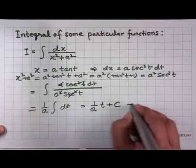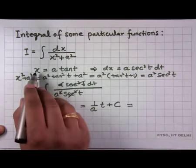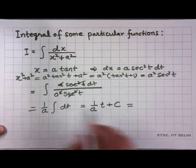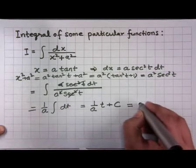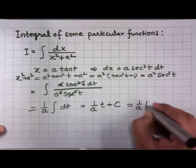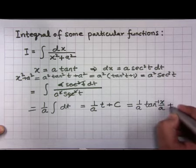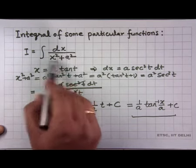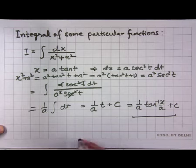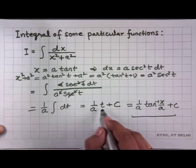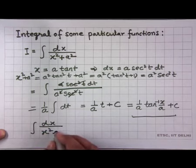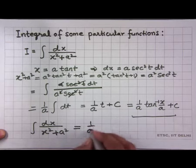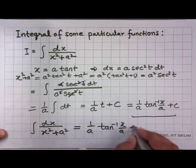From the substitution x = a·tan(t), we get t = tan⁻¹(x/a). So the result is (1/a)·tan⁻¹(x/a) + C. We must always keep in mind that the original integral is with respect to x, so the final answer must be a function of x. The important formula to note is: ∫dx/(x²+a²) = (1/a)·tan⁻¹(x/a) + C.